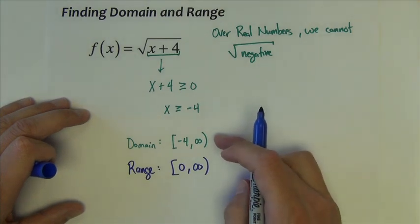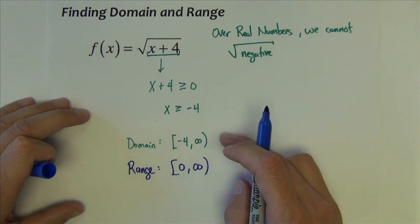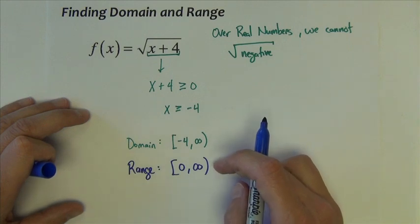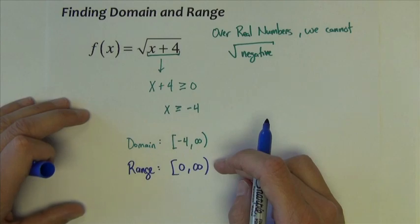So typically the domain, we've got algebraic ways to do it. We can confirm with the graph. The range, we've pretty much just used the graph all the time to do that.